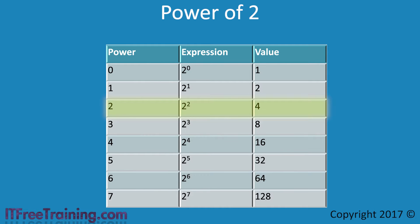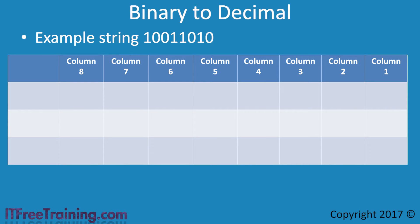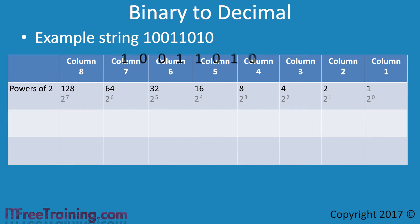Let's now see how this table is used to convert a binary number to a decimal. In this example, I want to convert the binary string to a decimal. To do this, I will build a conversion table. Using this conversion table, I will convert my example binary string to a decimal number. First of all, I will add the power of 2 values, starting with 2 to the power of 0, which gives a value of 1, then 2 to the power of 1 giving a result of 2, and so on. Now that I have a conversion table with the powers of 2 in it, I will next add my example.